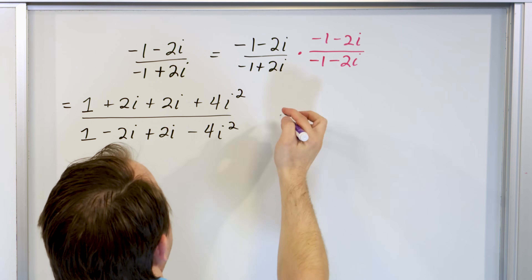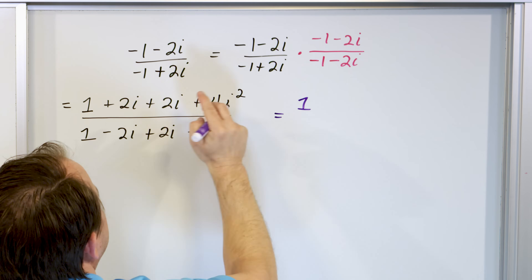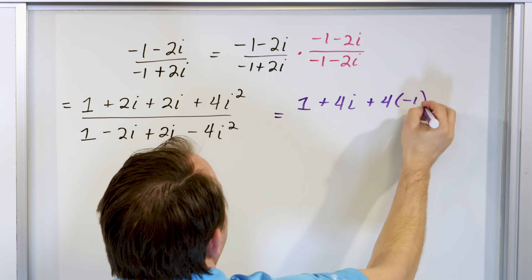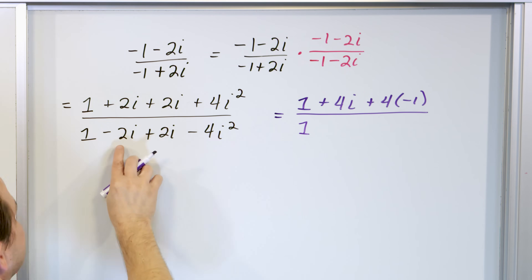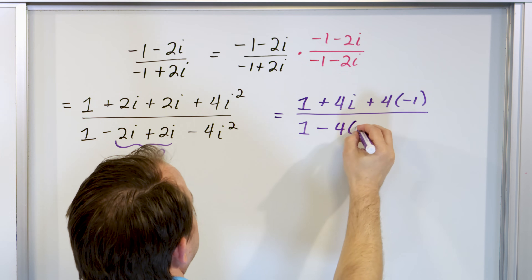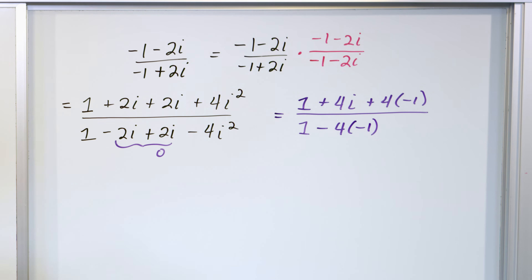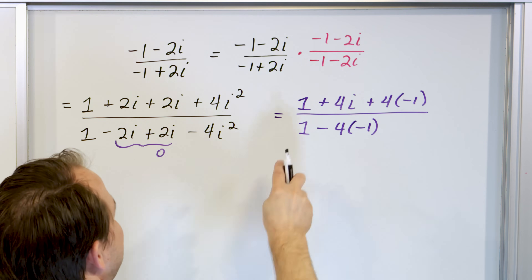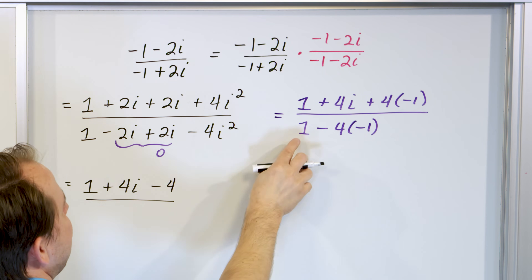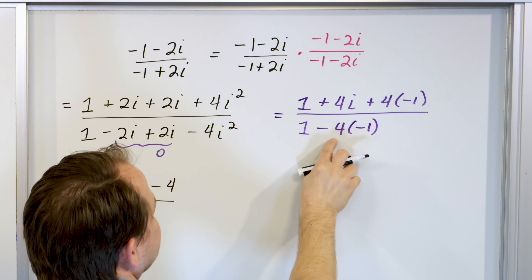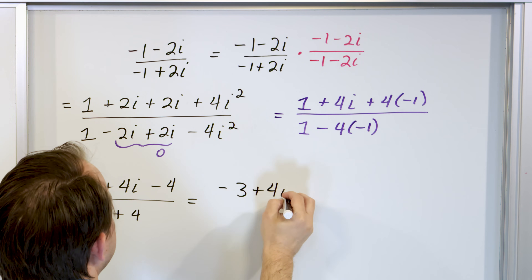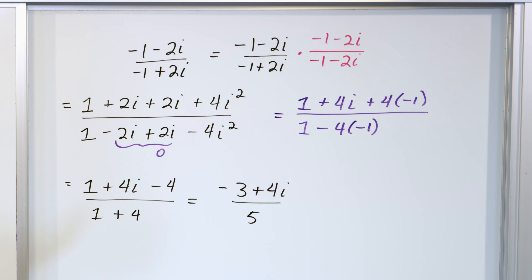Simplifying the numerator: one, then two i plus two i is four i, then four times i squared which is negative one. In the denominator: one, the i terms cancel to zero, minus four i squared which is negative one becoming positive four. So the denominator has no imaginary numbers — which is what we wanted. The numerator is one plus four i minus four, and the denominator is one plus four equals five.